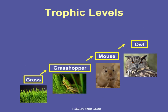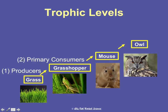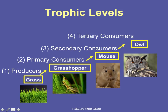Trophic levels are levels of nourishment. In this food chain, grass is on the first trophic level, and the first level is always producers. The grasshopper is the second trophic level and is called a primary consumer — they are the first consumers, so it's a bit confusing since it's the second level but first consumer. The mouse is level three and a secondary consumer. The owl is level four and a tertiary consumer. Level five would be a quaternary consumer, and we can continue from there.